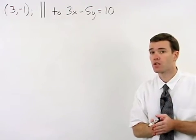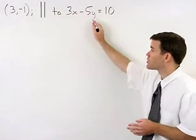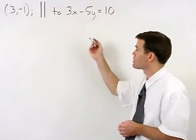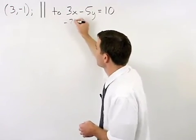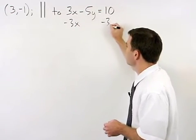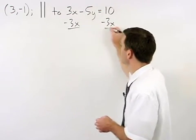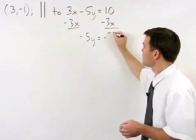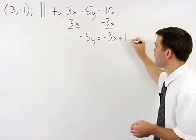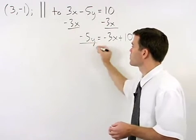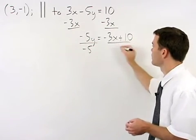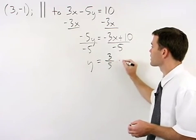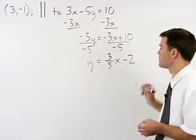Remember in y equals mx plus b form, y is by itself on the left side of the equation. So our first step is to subtract 3x from both sides to get negative 5y equals negative 3x plus 10, then divide both sides by negative 5 to get y equals 3 fifths x minus 2.